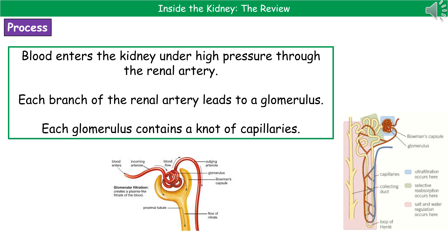Blood enters the kidney under high pressure through the renal artery. Each branch of the renal artery eventually leads to a little ball of blood vessels called the glomerulus — a knot of capillaries. You can see a close-up at the bottom: blood enters on the left-hand side, forms that little knot of capillaries, then leaves on the right-hand side.